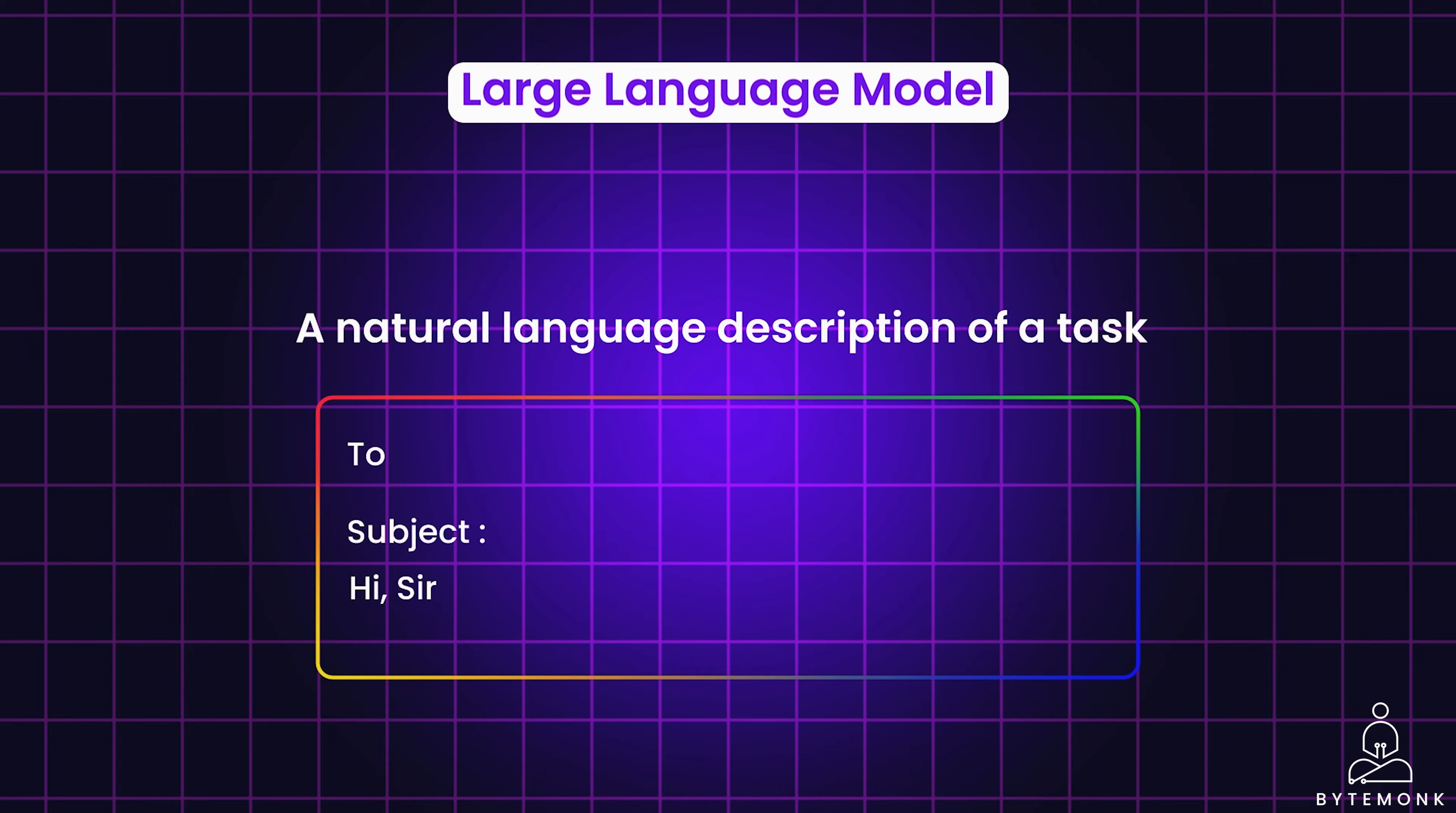Autocomplete in search or Smart Compose in Gmail are examples of applications of language models. Language models can predict the most likely word or set of words that are likely based on the text that you entered.